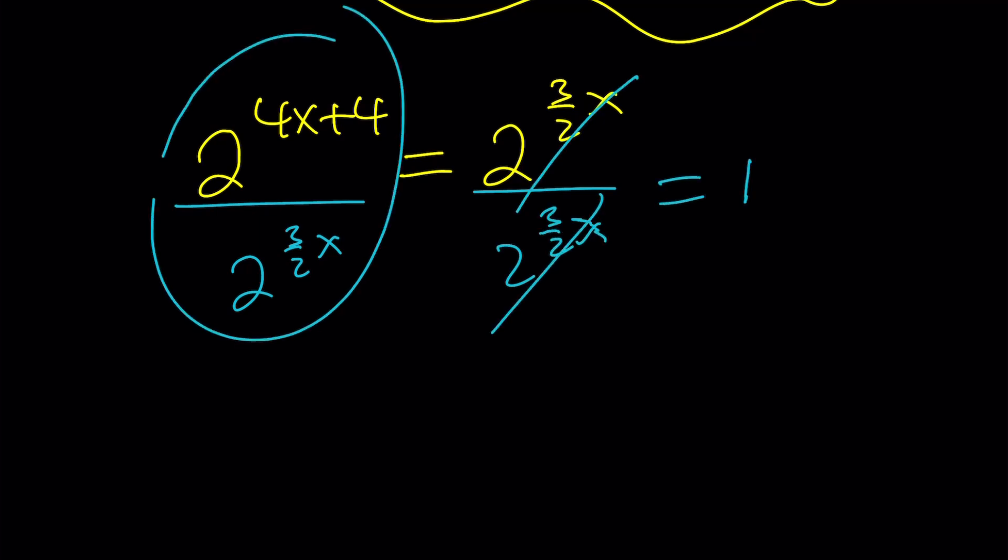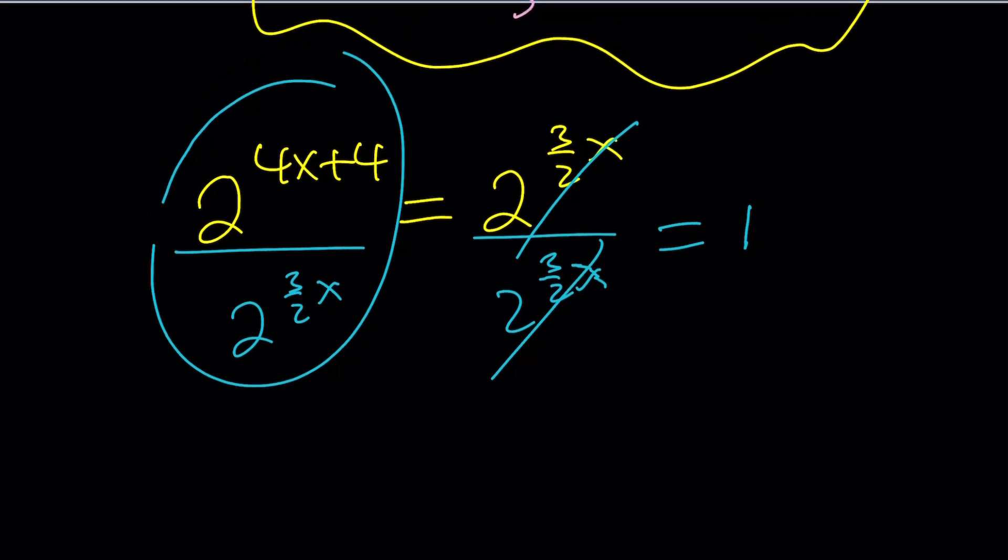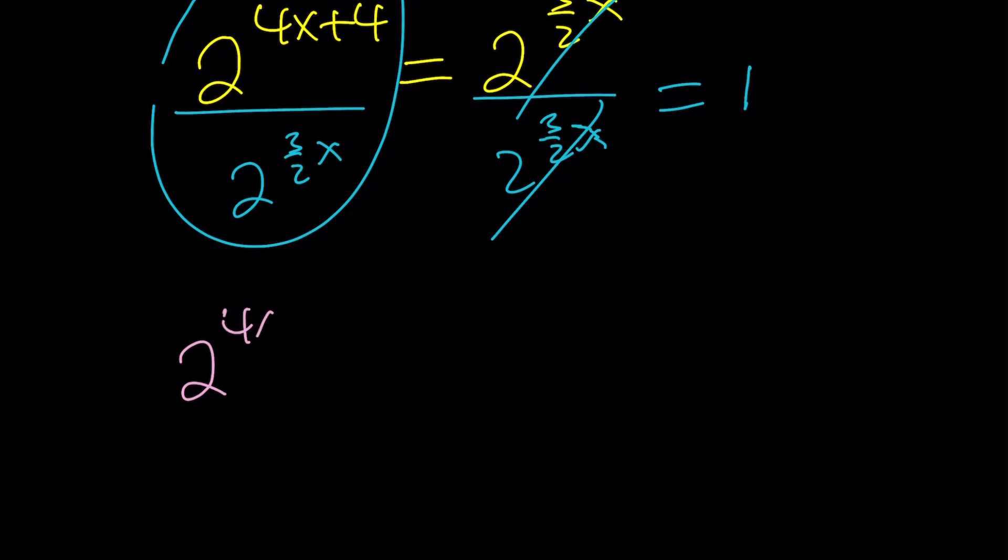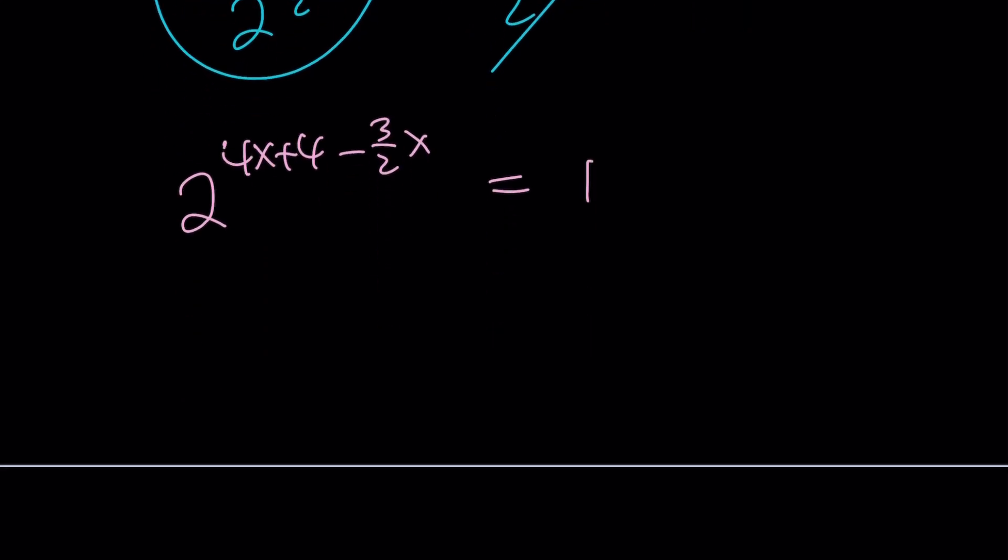And here we are supposed to subtract exponents. Yes. Let's go ahead and do it. 2 to the power of 4x plus 4 minus 3 halves of x equals 1. It should be fairly easy because we already did that, right?